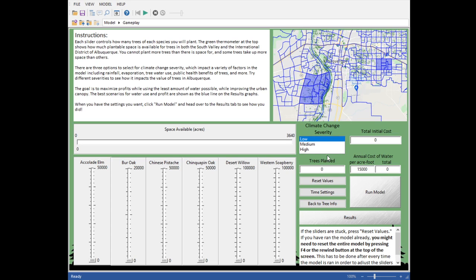Here's a little map reminding you of where you're actually planting trees in the South Valley in the International District. Right here is the first selection and choice that you have, and that is climate change severity. So you have three scenarios, low, medium, and high, which impact things like water supply, rainfall, temperatures, how much water the trees need, as well as the price of water. The price of water you can actually see right here, and you can see it change and go up as climate change gets worse and worse.